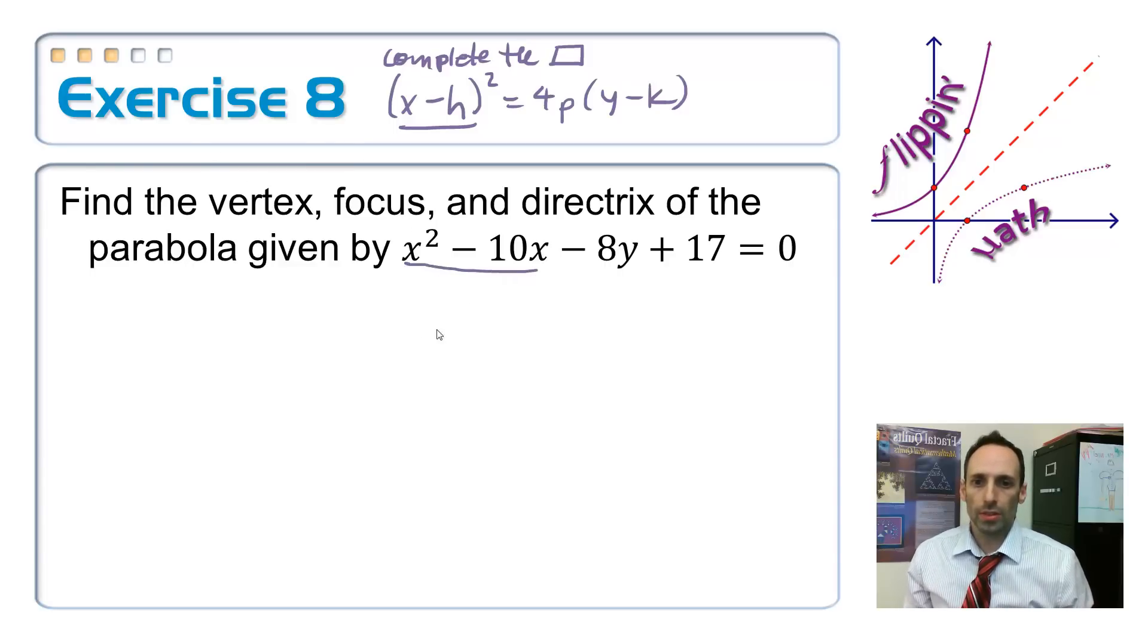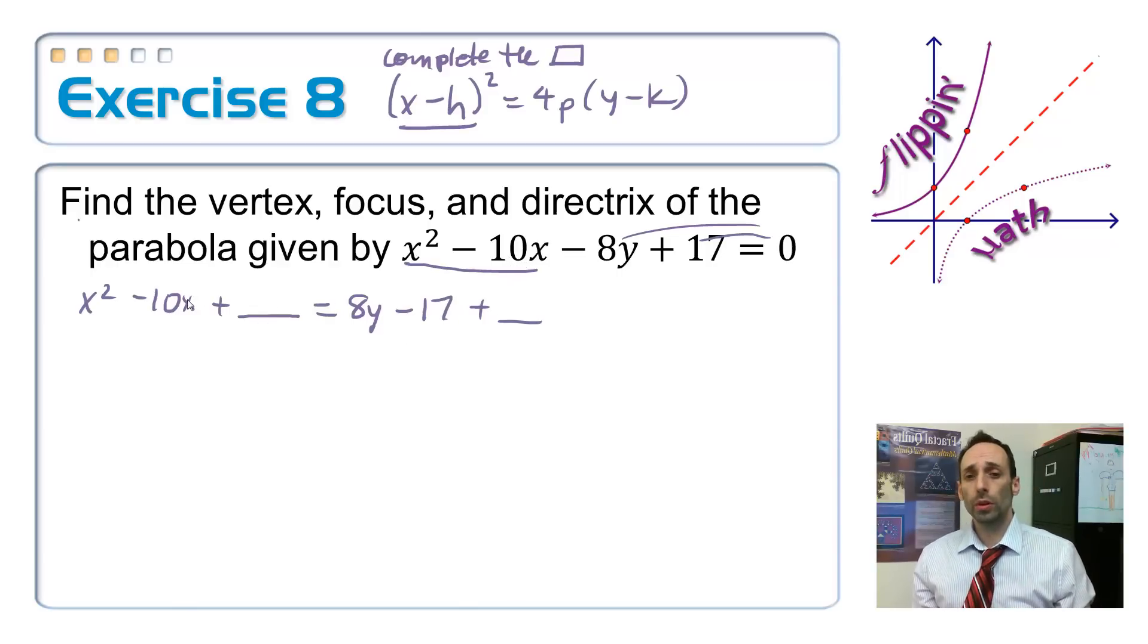So, these two are going to stay where they're at, x squared minus 10x, get the minus 8y and the 17 over to the other side. So, let's try that. x squared minus 10x plus a blank is equal to, now I'm going to add these two things over here. So, 8y minus 17 plus a blank. Remember, completing the square, if I add something to the left, balance it out by adding something to the right. So, the number that completes the square on the left-hand side, you take half the negative 10, which is negative 5, negative 5, and then you square that number up and you get 25. Add 25 to the left, let's add it to the right, 25.